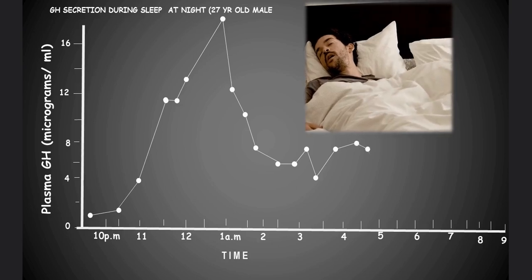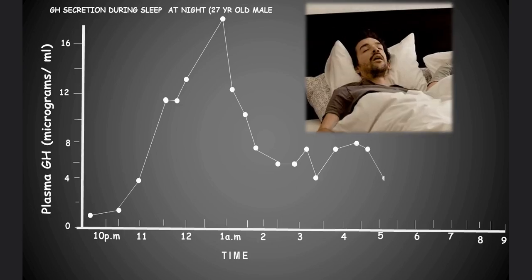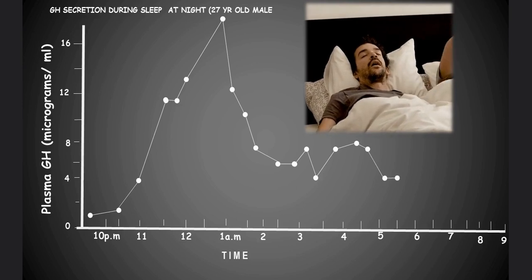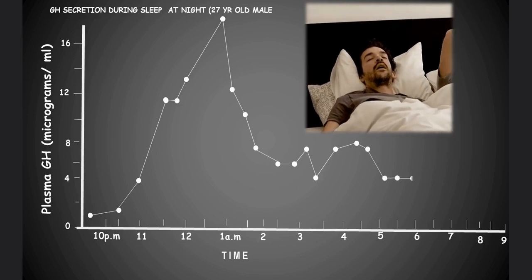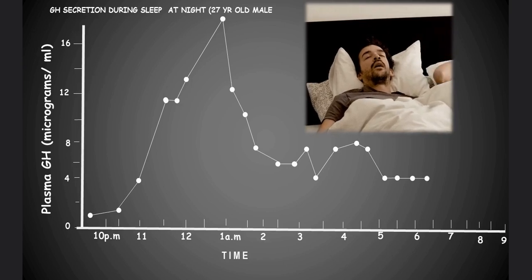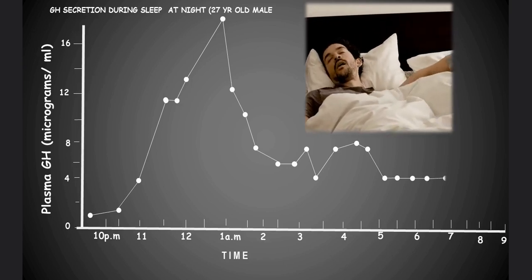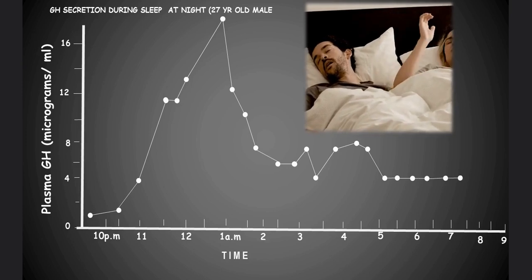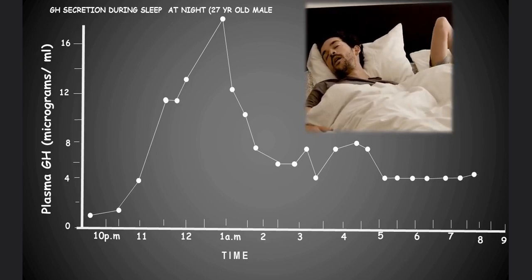The rise in growth hormone secretion was gradual, the initial increase being observed 20 to 40 minutes from onset of sleep. Growth hormone concentration in the blood remained high for 1.5 to 3.5 hours before gradually reverting to normal or baseline level.